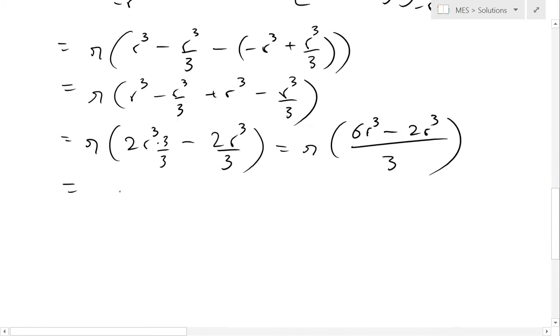And that just becomes pi, this subtracts, 4 r cubed divided by 3, or written just a bit nicer, 4 over 3 pi r cubed, and there is our answer.